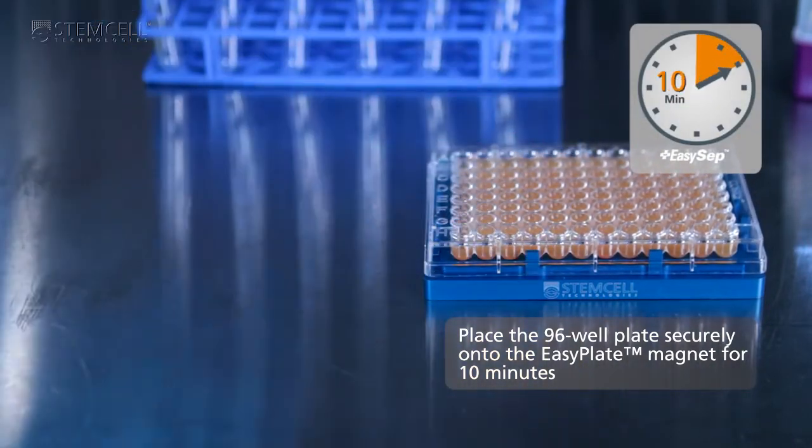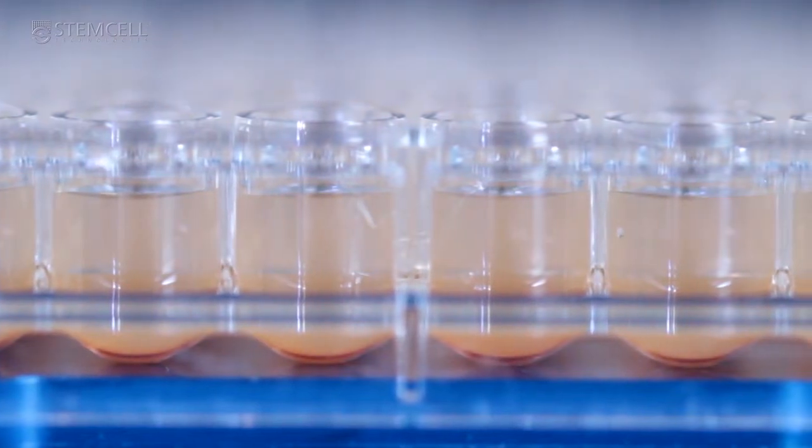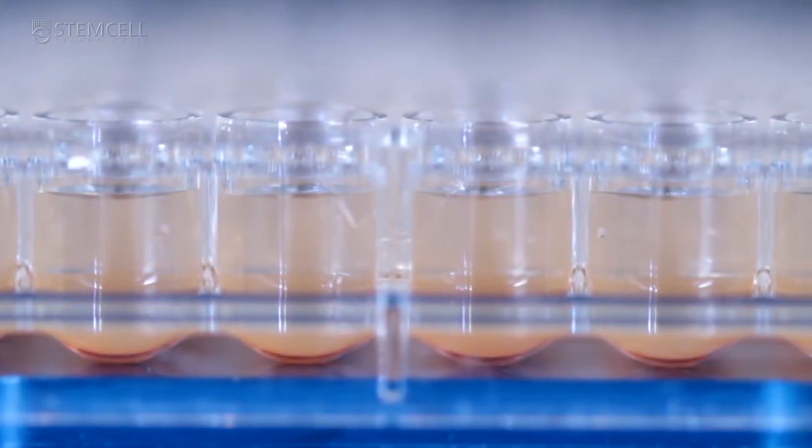The magnetically labelled cells will be pulled to the bottom of the 96-well plate, leaving the desired B cells in suspension.